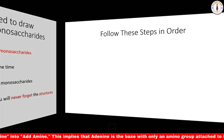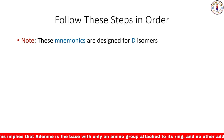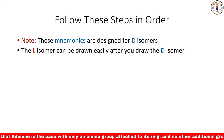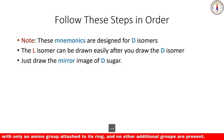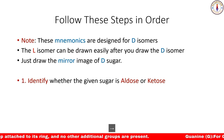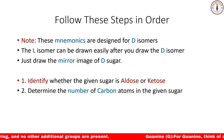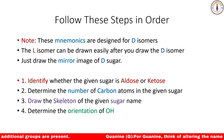Here I am showing you the structures of D-isomers of the monosaccharides. The L-isomer can be drawn easily after you draw the D-isomer — you just need to draw the mirror image. Here are the steps: first, identify whether the given name is of an aldose sugar or a ketose one. After that, determine the number of carbon atoms, then draw the skeleton, and finally find the orientation of the hydroxyl groups on each carbon.